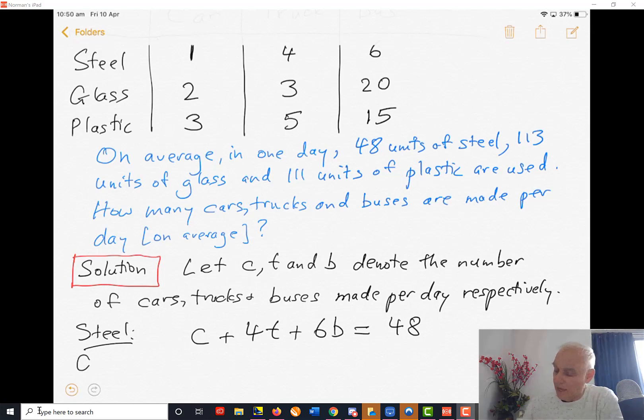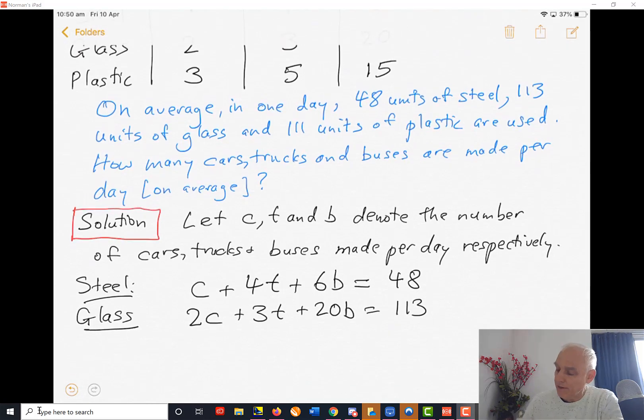Similarly for glass, 2C is the units of glass required for the cars, 3T for the trucks, and 20B for the buses, totaling 113. And for plastic: 3C plus 5T plus 15B equals 111.